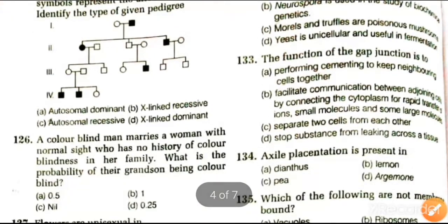Next question: the function of gap junctions is performing cemented to keep neighboring cells together; facilitate communication between adjoining cells by connecting the cytoplasm for rapid transfer of ions, small molecules, and some large molecules; separate two cells from each other; or stop substances from leaking across the tissue. The answer is facilitate communication between adjoining cells.